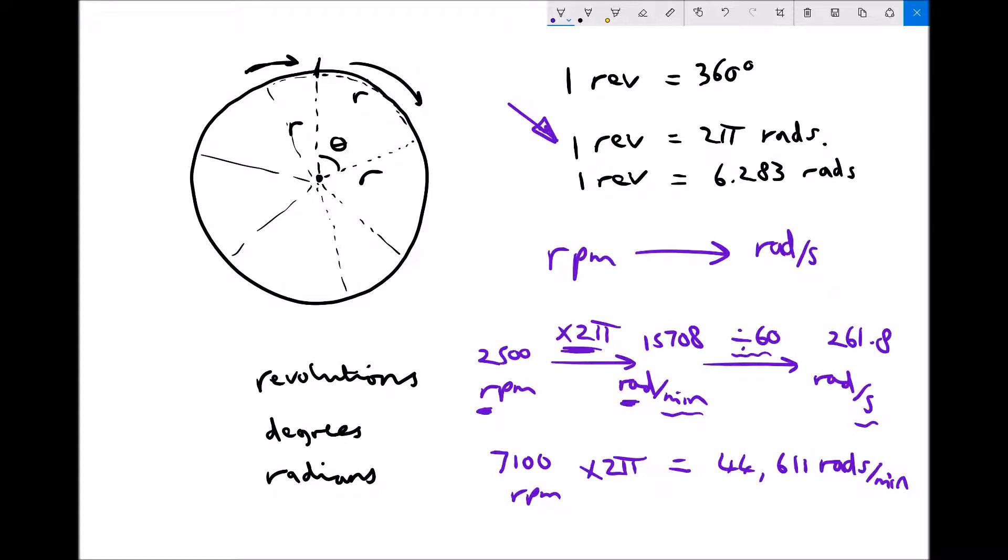But we don't want rads per minute, we want rads per second. So what we need to do is take that 44,611 and divide it by 60. When we divide that by 60 we get 743.5 rads per second.